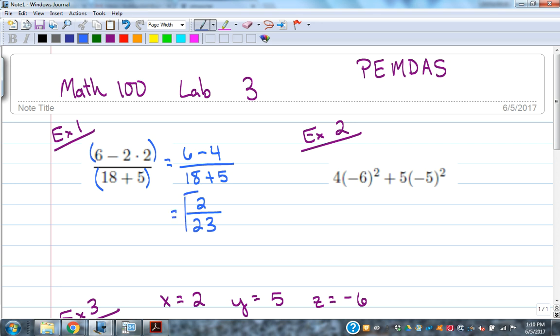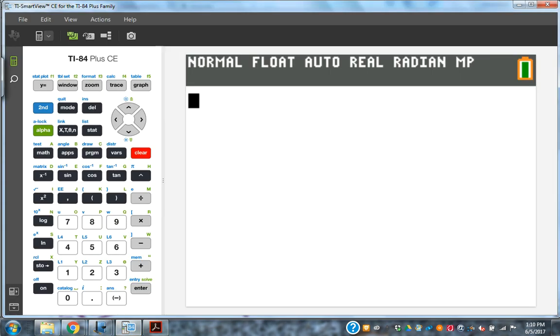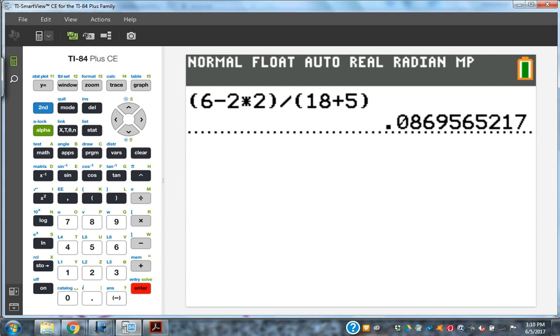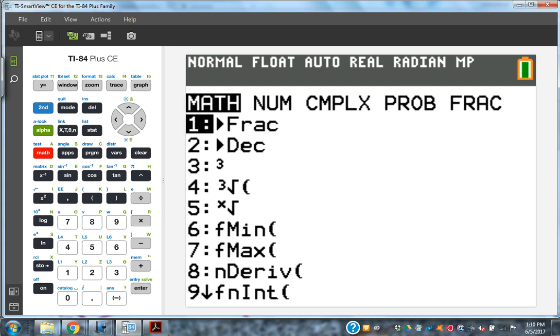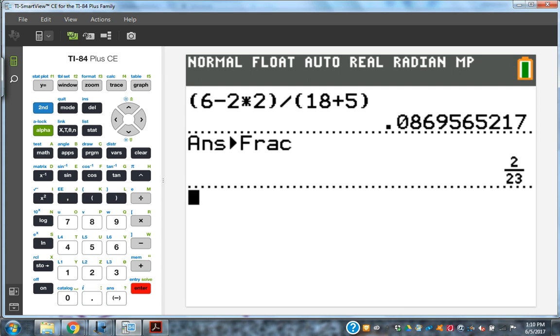If you want to use your graphing calculator to help you do these problems, that's very possible, but you have to think about the grouping symbols. We would need to write in parentheses 6 minus 2 times 2 in parentheses, divided by parentheses 18 plus 5 and close those parentheses. We could hit Enter. My calculator is set to give me decimal answers automatically. To turn that into a fraction, I hit Math and then the Enter button twice, and I've turned that into 2 over 23, which is the same thing I got by doing it by hand.